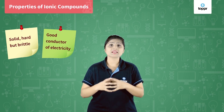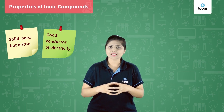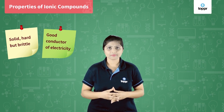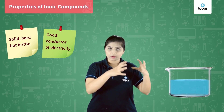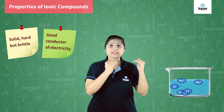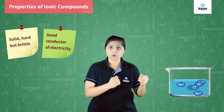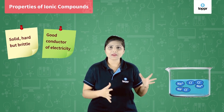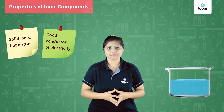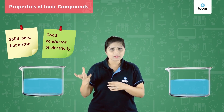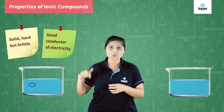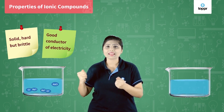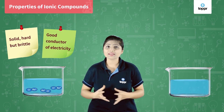Ionic compounds can conduct electricity either in the molten state or in the aqueous state. When we melt ionic compounds, the heat overcomes the force of attraction between the ions and they are free to move and conduct electricity. When we dissolve ionic compounds in water, the force of attraction is broken and the ions are free to move throughout the entire solution.